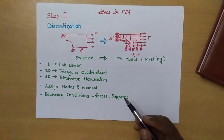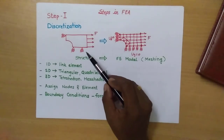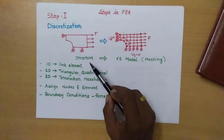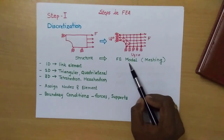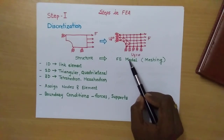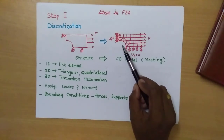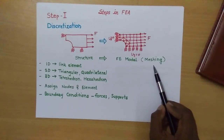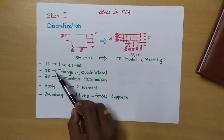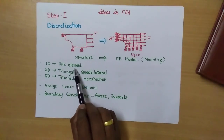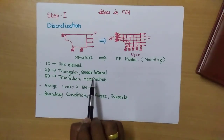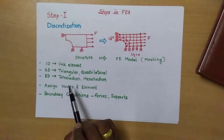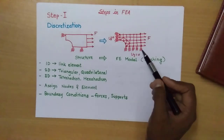Step one is discretization. In this discretization, any problem — whether structural or otherwise — is converted into a finite element model. A finite element model is a combination of nodes and elements. This formation of nodes and elements is called meshing in finite element analysis. We can convert according to the problem: if it is a 1D problem, we use a link element; triangular or quadrilateral for 2D; and tetrahedron or hexahedron for 3D solid problems. We then assign the total nodes and elements in the system.